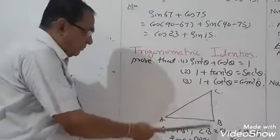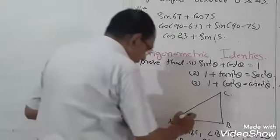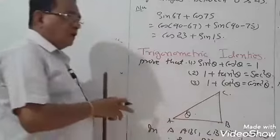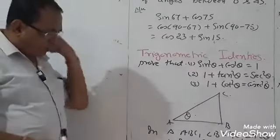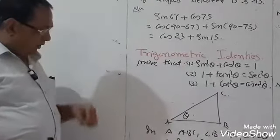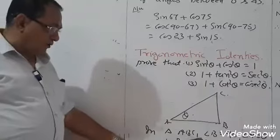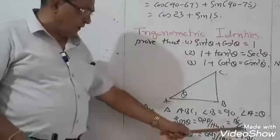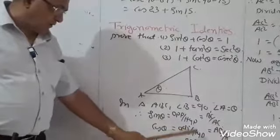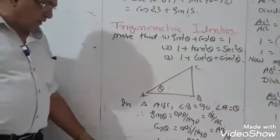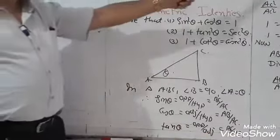With reference to angle A in the right triangle: sin θ is equal to opposite upon hypotenuse, that is BC upon AC. Cos θ is equal to adjacent upon hypotenuse, that is AB upon AC. Tan θ is equal to opposite upon adjacent, that is BC upon AB.